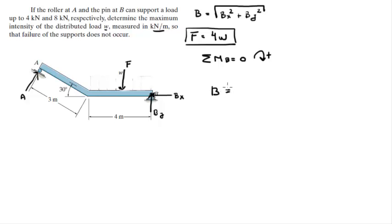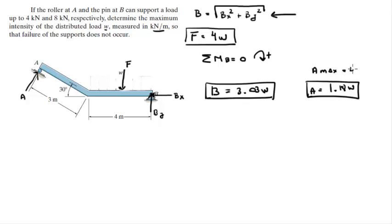So the next thing that we need to do is find B which I told you use this formula and when you plug in BX and BY into that formula you get that B is equal to 3.03 W. So we got B and we find A before to be 1.18 W and they tell you that the maximum A can be is equal to 4K and the maximum B can be is equal to 8K.